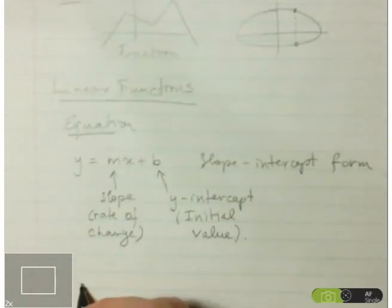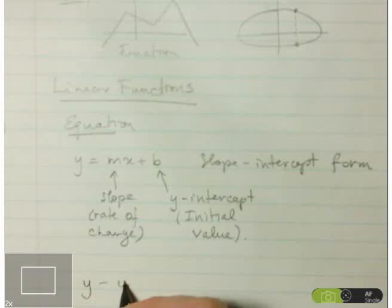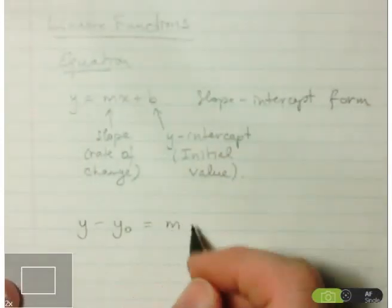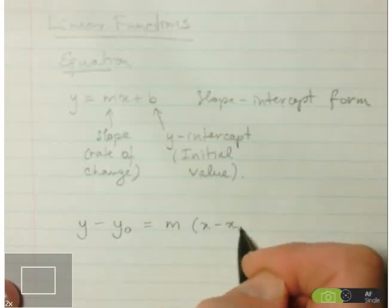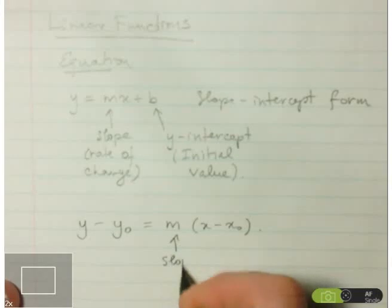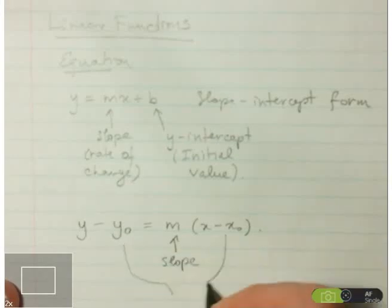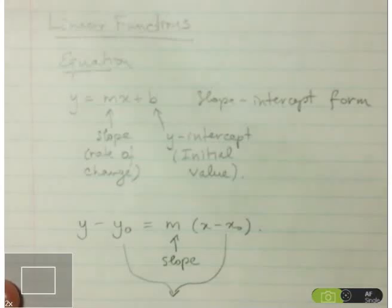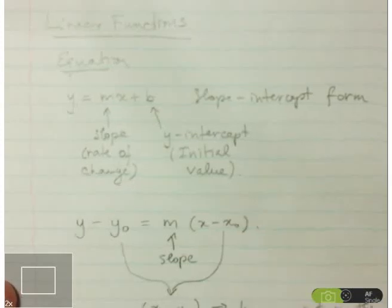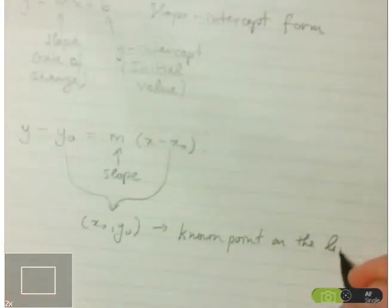Now the other form of the equation, which we learned just recently, is the point-slope form. So that's useful if we want to quickly write down the equation when we know the slope and we know one specific point on the line. So yet again, m represents the slope, and these two values, what we call x-naught and y-naught, represent a known point on the line. So this is a known point on the line.